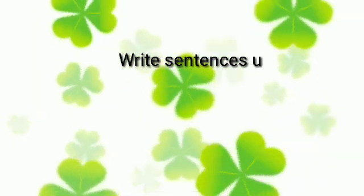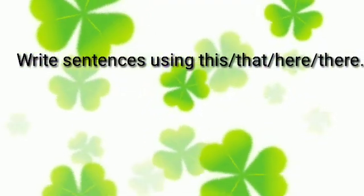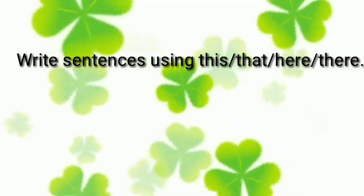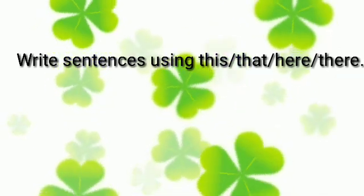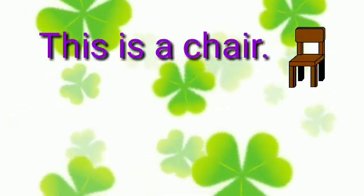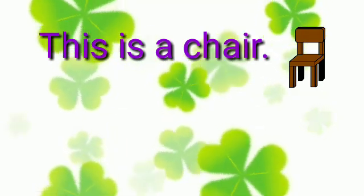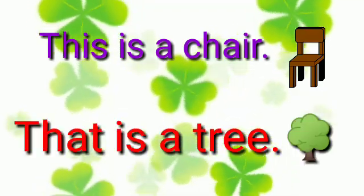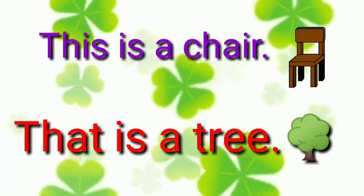Write sentences using this, that, here, there. Ata aplyla this, that, here, there ya shabdaan sava par korun vaakya liha. This is a chair. (He khurchi ahe.) That is a tree. (Teh jhaad ahe.)